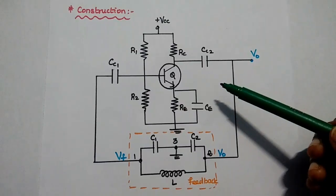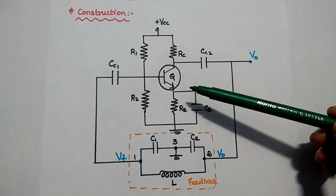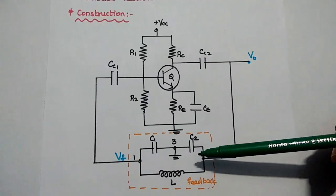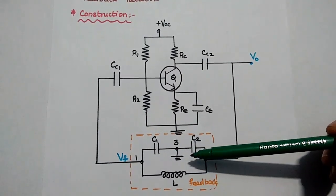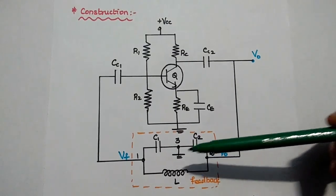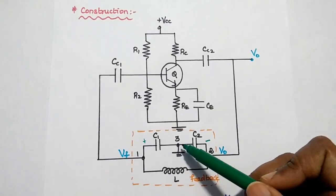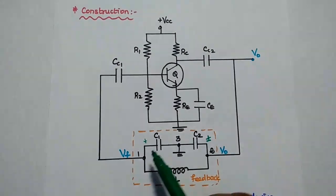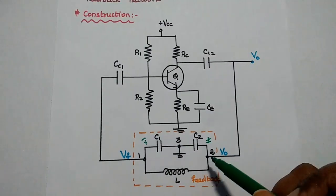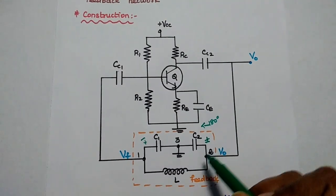Let's discuss the working principle of the Colpitts oscillator. When supply voltage VCC is applied to the amplifier circuit, an oscillatory transient current is produced in the tank circuit. This oscillatory current produces an AC voltage across the C1 and C2 capacitors. In the feedback network, terminal 3 is grounded at zero voltage. Terminal 1 is at positive potential when terminal 2 is at negative potential with respect to terminal 3, and vice versa. Hence, the phase difference between terminals 1 and 2 is always 180 degrees.